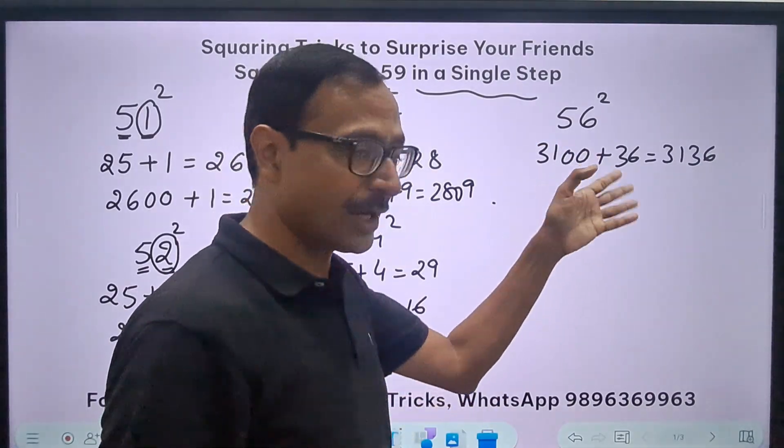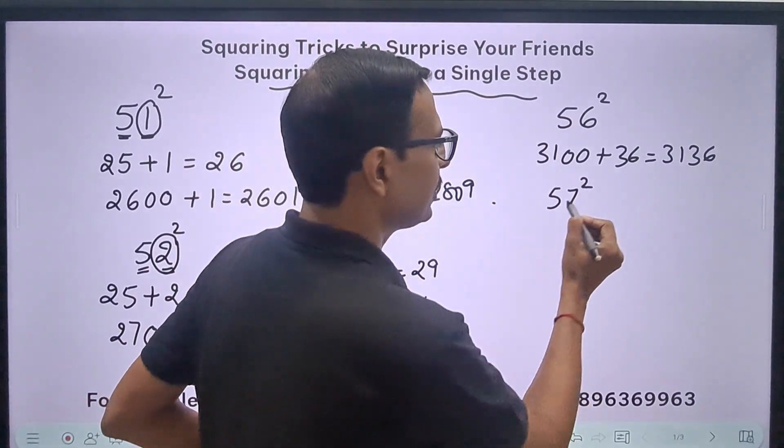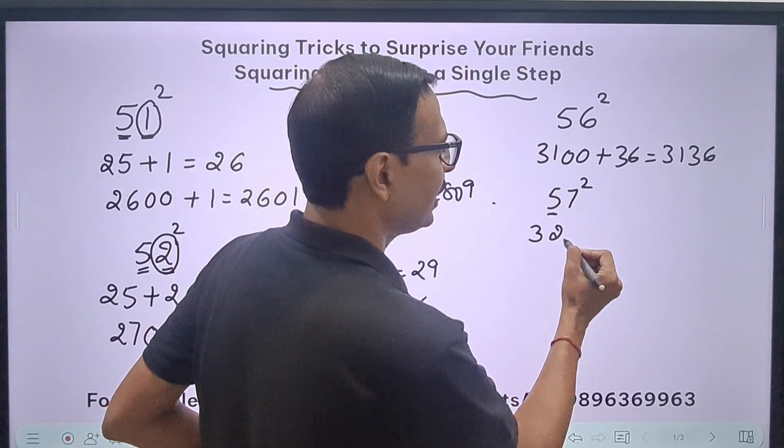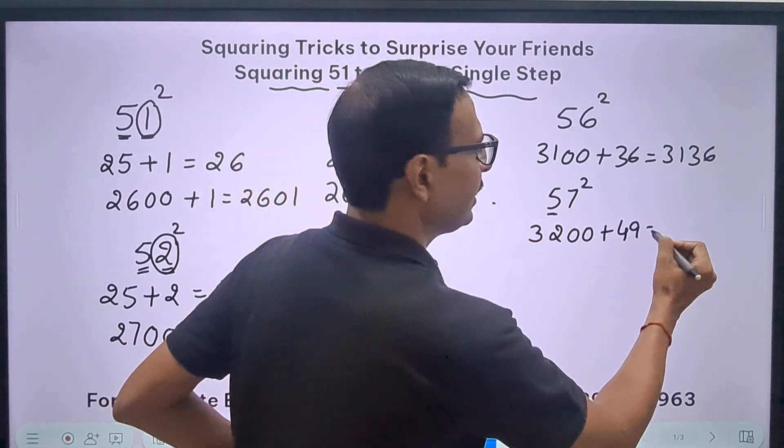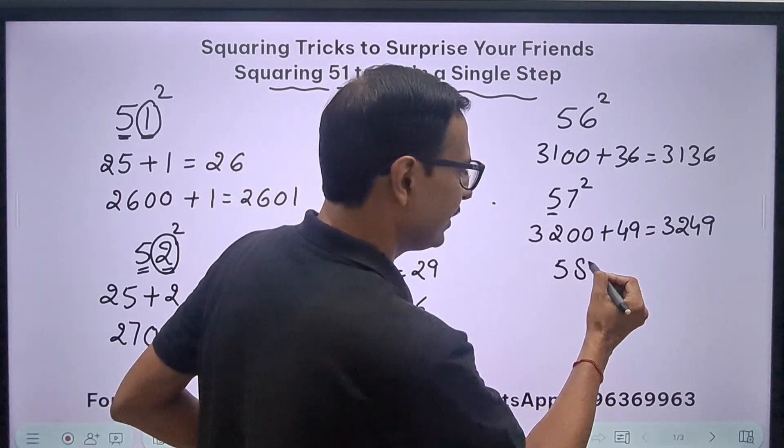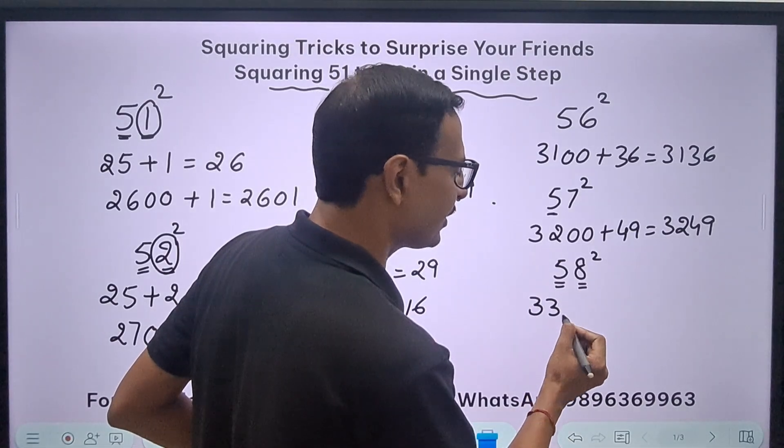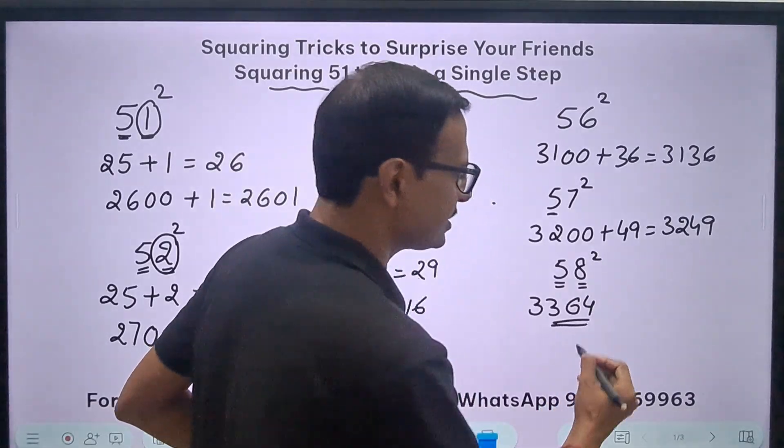See, no more steps now required and you can actually do that mentally also. How about 57 square? 25 plus 7 is 32, followed by 2 zeros, and add what? 7 square 49. It is 3249. 58 square: 25 plus 8 is 33, so 3300, and 8 square is 64. The answer is 3364.